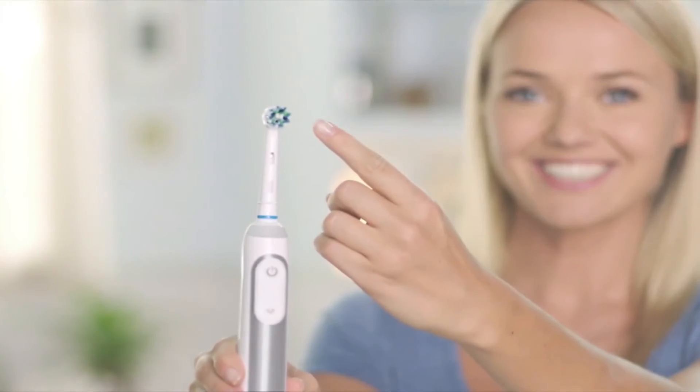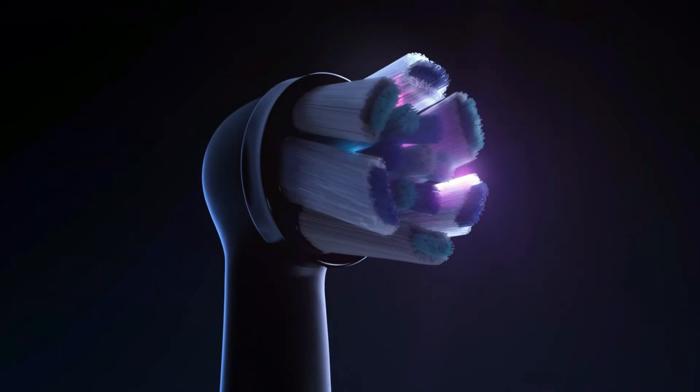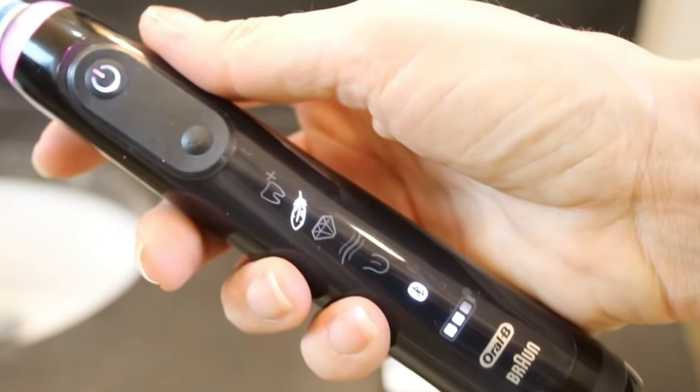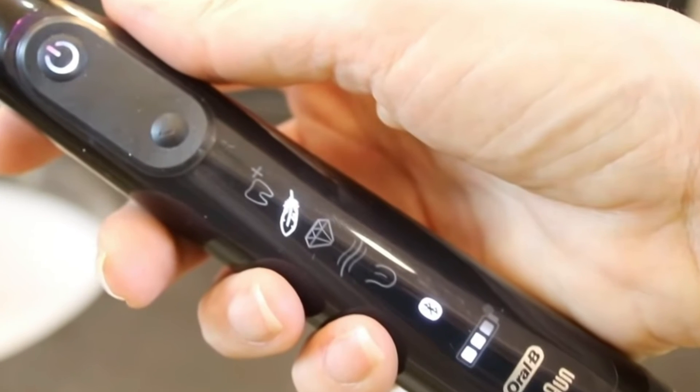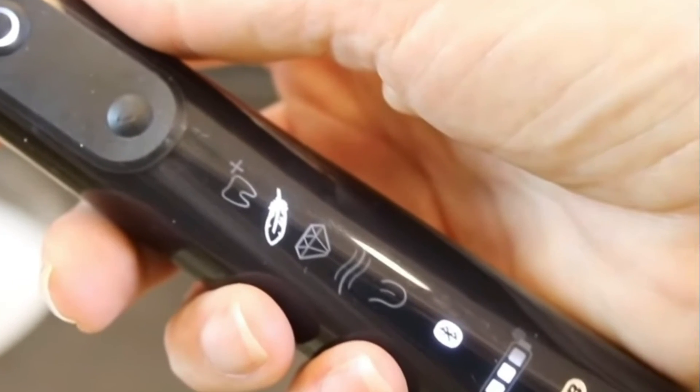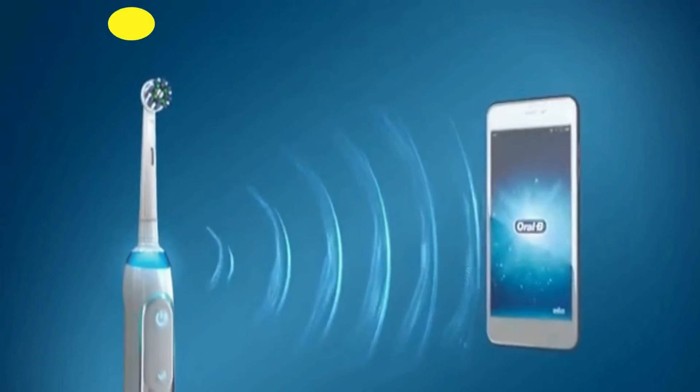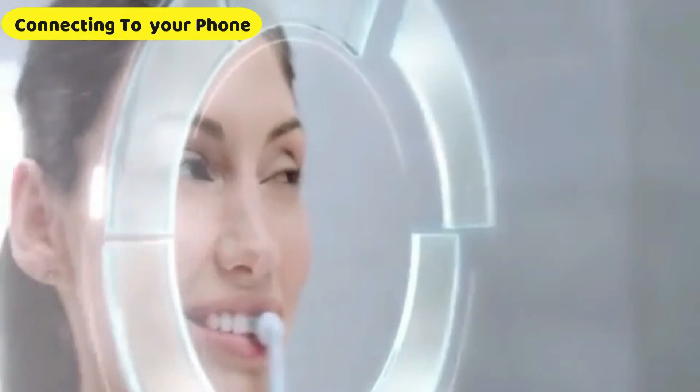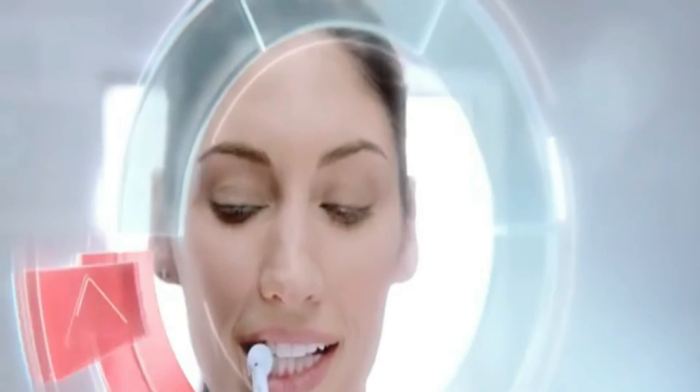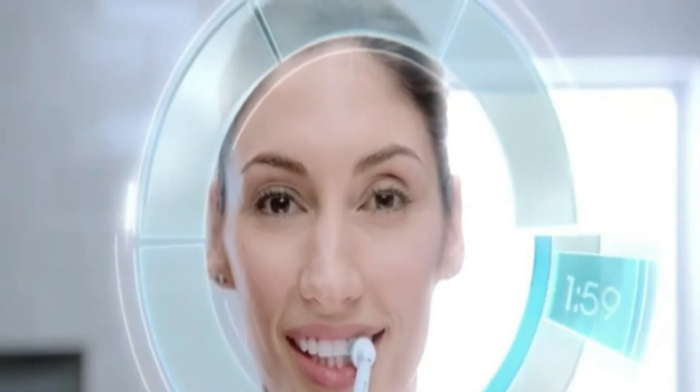If you want the finest of the best electric toothbrush, with all of the cleaning modes and bells and whistles, the 8000 comes highly recommended. The Oral-B Genius Pro Electric Toothbrush has several cleaning modes to assist you in taking care of your teeth at home. The new Genius 8000 connects to your smartphone via Bluetooth to allow position detection. Which utilizes face recognition to assist you to know where you've brushed so you never miss a zone.